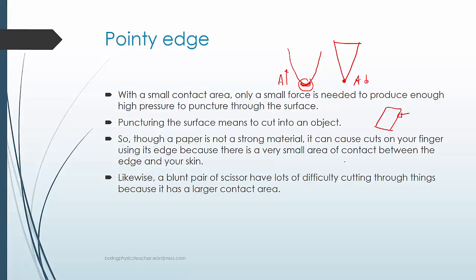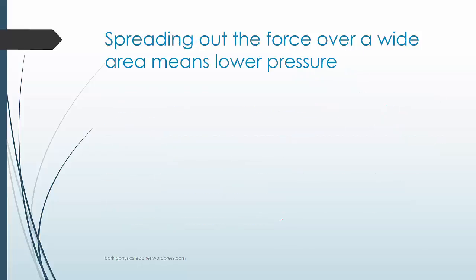Likewise, a blunt pair of scissors has a lot of difficulty cutting through things because it has a much larger contact area. The pressure that is exerted is relatively smaller than a sharp pair of scissors. And again, sharp pair of scissors means that there's a small area of contact.